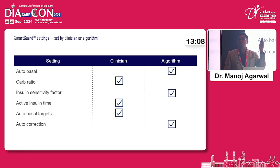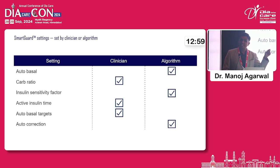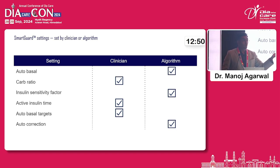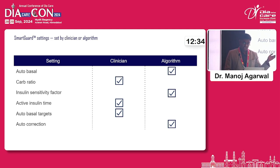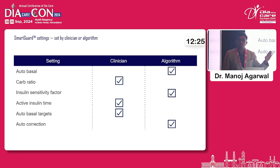Suppose we are in the conference eating gulab jamun — it contains a very high amount of carbohydrate. In that case, I want to work very aggressively, so I set the active insulin time to only two hours. But suppose my gym trainer, a Type 1 diabetic educator, is eating more protein because he is going to the gym — in that case, I will set the active insulin time to three or 3.5 hours. So according to the patient's occupation, I will change the active insulin time. The pump gives the autobasal targets, but autocorrection is given by the insulin pump itself — so some important steps you still need to decide.